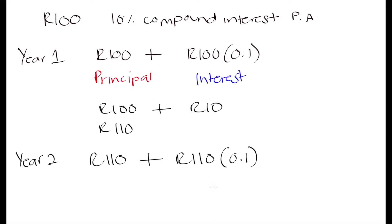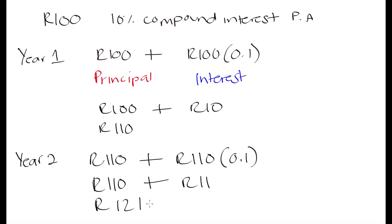Now when we go to year two, we are going to gain interest not on the original 100 Rand that we initially borrowed, but on the 110 Rand that was the result of our principal plus the interest from year one. So in year two it becomes 110 Rand plus 10% of 110 Rand. This 10% interest is now based on the principal plus the interest of the first year — that is the key difference between simple and compound interest. At the end of year two we get 110 Rand plus 11 Rand, giving us 121 Rand.